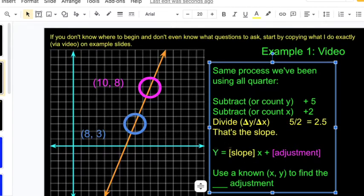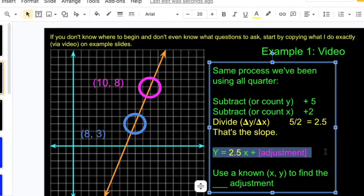Okay, so I'm going to replace this with two point five. Y equals two point five x plus some adjustment. In order to find this adjustment, I'm going to pick a point. Since I already have this adjustment word in pink, I'm going to use my pink point to find the adjustment.